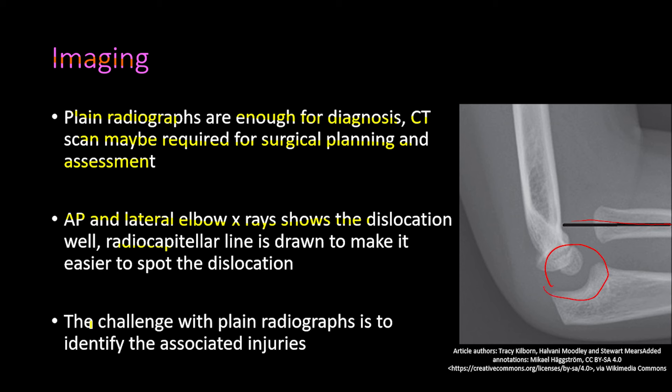Commonly associated injuries include radial head fracture, coronoid process fracture, or both together forming the terrible triad injury. In children, a medial epicondyle fracture is also a common associated injury.